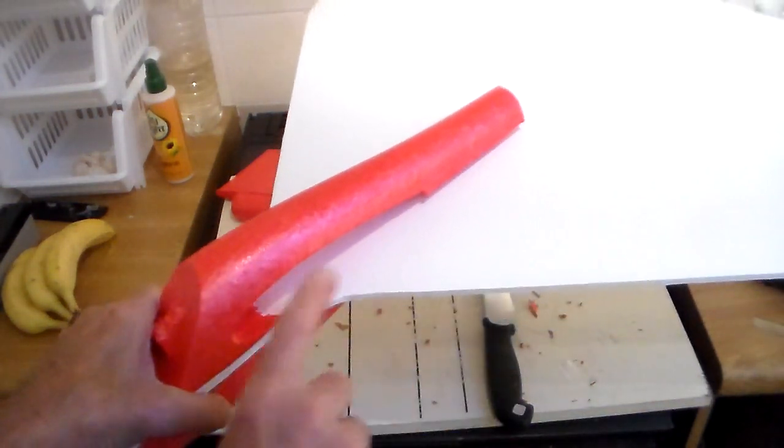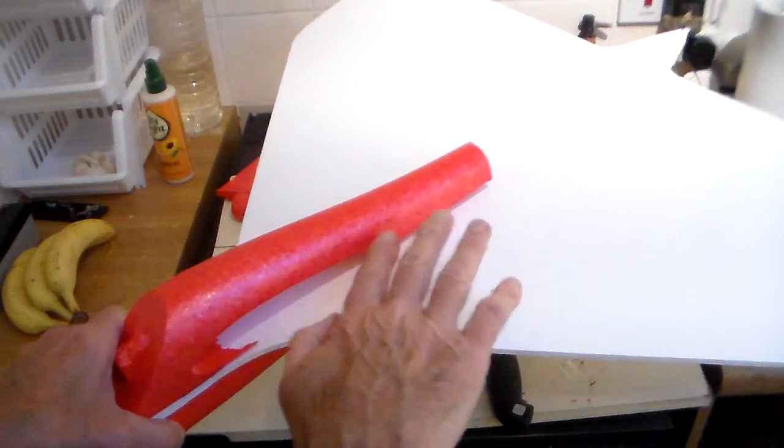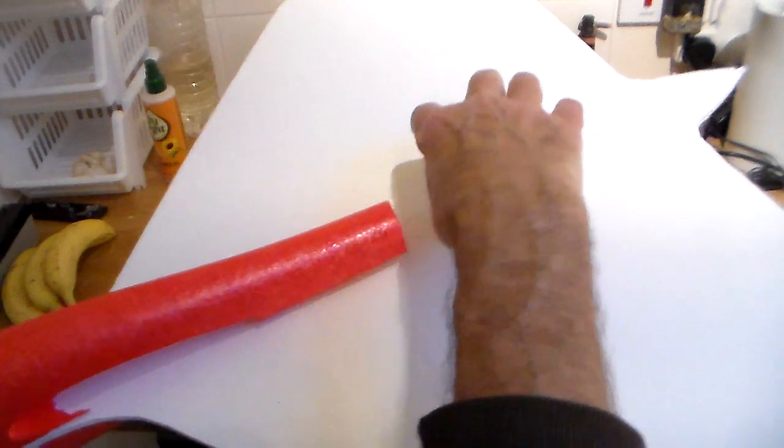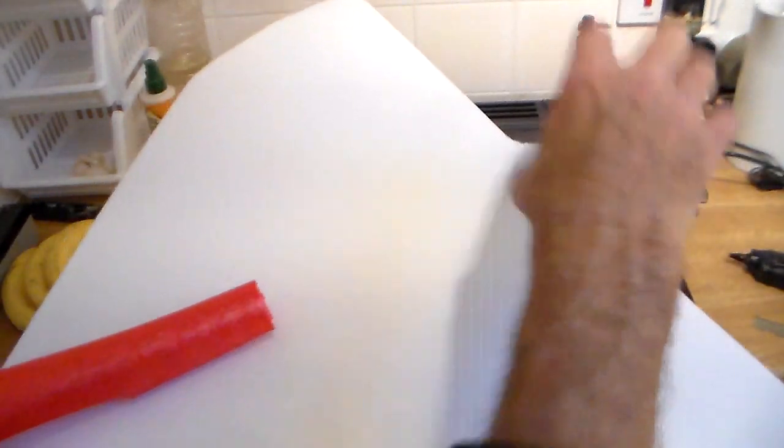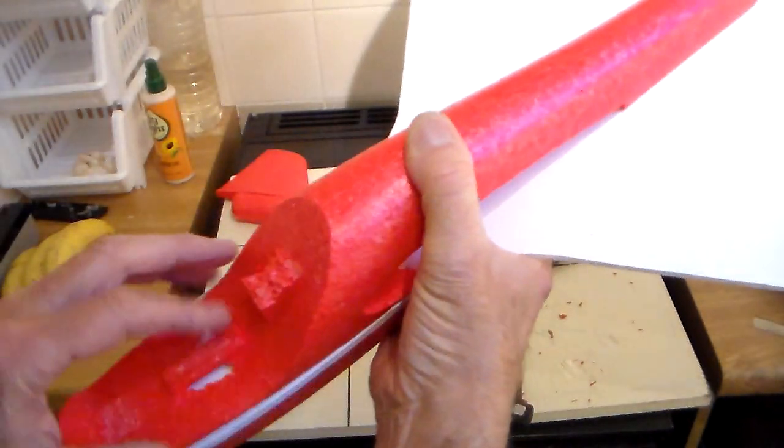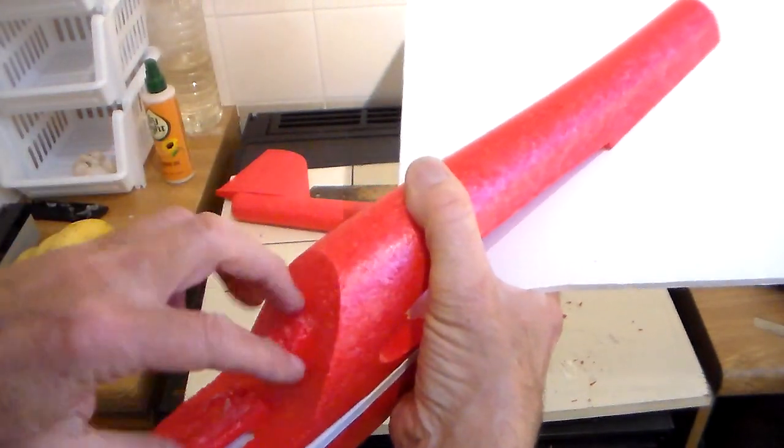I may have to move it back a bit. The air intakes for the EDF are going to be here, so this is going to be cut back. EDF will sit about here with the duct coming out that way. That's the master plan. I just thought I'd give it a go.